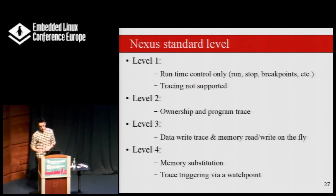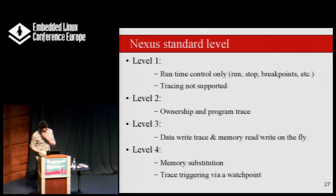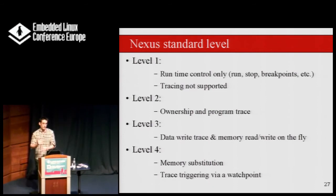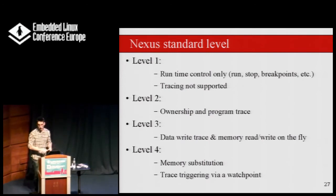At the basic level, Nexus supports only debugging: running, stopping, setting breakpoints, inspecting memory — no tracing. At level two we have ownership trace and program trace. Ownership tracing means the OS writes to specific registers when scheduling a task, generating an ownership trace message showing which task is scheduled. Program trace is basically branch tracing and program flow. At level three we have data write trace: monitoring a memory region for all data writes and generating a message per write at a specific address. At level four there is optional support for memory substitution and, the one I find quite nice, trace triggering via watchpoint — set a watchpoint and trigger a full trace.